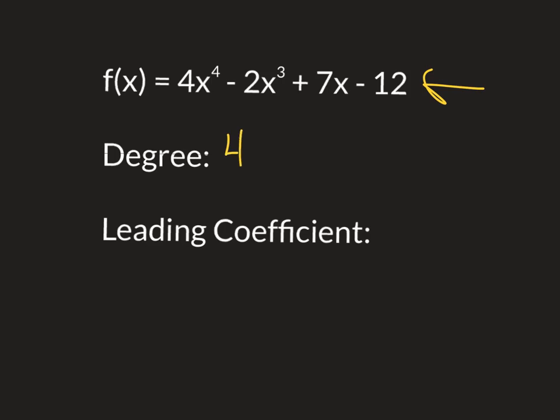The leading coefficient doesn't necessarily mean it's the first one — it's the coefficient where the degree term is. So the degree term is first this time, so the leading coefficient is also four. They're both four. Leading coefficient is where the degree is, and the degree is the largest exponent. So we're going to use those the rest of the day.